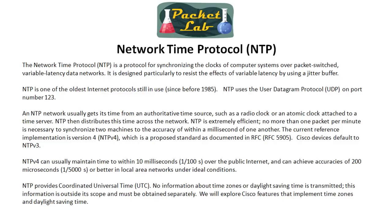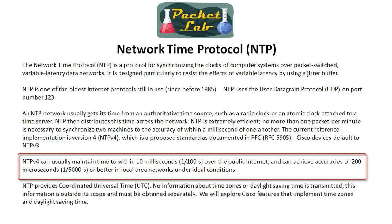Stratum goes all the way to 16 on NTP version 3 — a stratum of 16 means unreachable. Version 4 supports up to 256 strata. Once you get past stratum three or four, you're looking at possible inaccuracies due to distance from the actual time source. There are at least four different versions of NTP; version 4 is the most recent. Cisco devices use NTP version 3 by default, which can be accurate to within 10 milliseconds over the public internet and within 200 microseconds on a LAN. NTP always provides time in UTC, coordinated universal time, formerly known as Greenwich Mean Time. You'll want to convert this to your local time zone on your devices, and we'll show you how towards the end of this lesson.